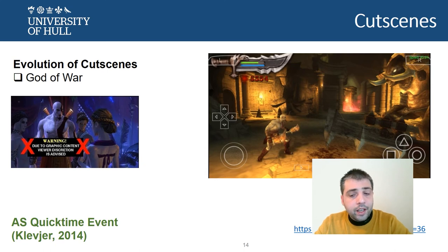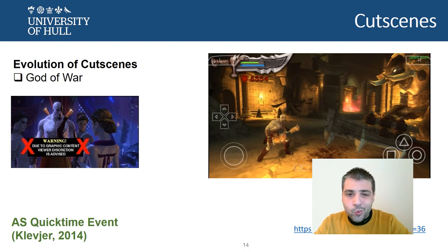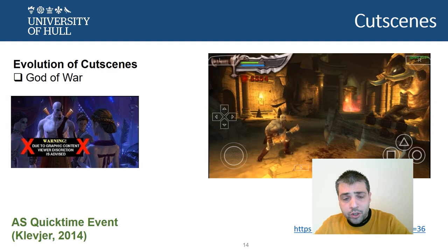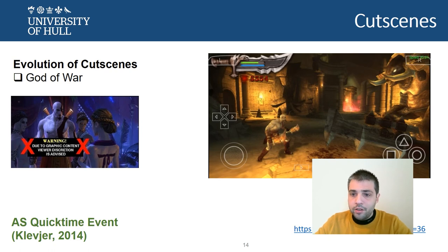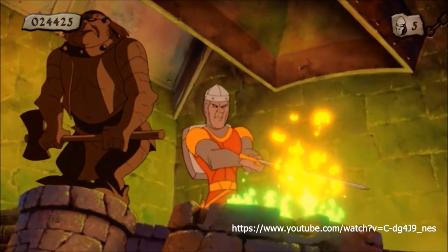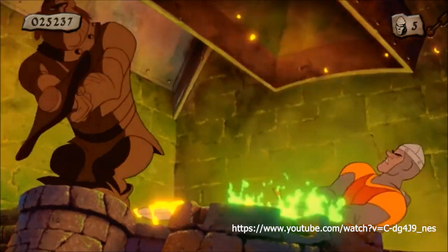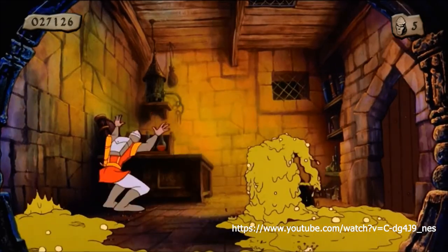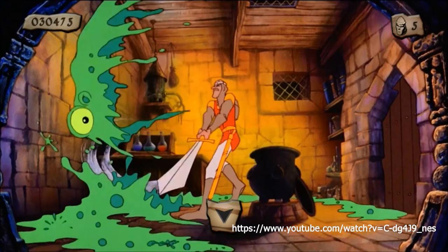Another kind of cutscene is the quick time event, popularized by franchises like God of War. These are sequences of soft animations triggered by interaction with the controller. A very famous example is Dragon's Lair — you might have seen it referenced in the second season of Stranger Things.